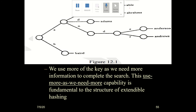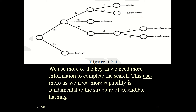Starting with the root node, since we have keywords starting with A and B, we have only two branches. For Abel, we go: A, then B, then E, then L — reaching Abel. For Abraham, it is A, B, then R — and we end up there because no other keyword shares that path.